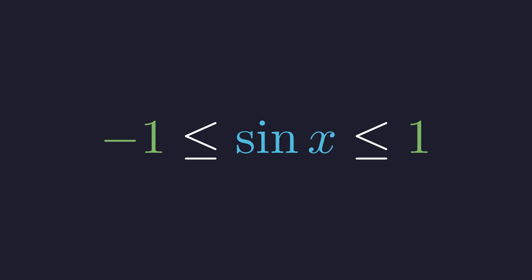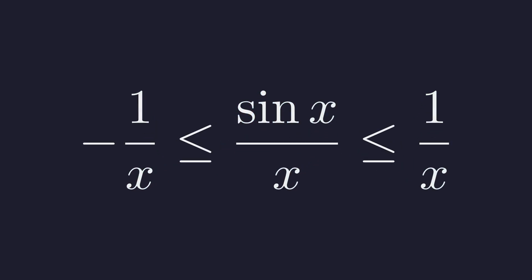To make the middle part look like our original problem, we need to divide every single part of this inequality by x. Since x is approaching positive infinity, we know x is a large positive number. So dividing by it doesn't change the direction of the inequality signs.